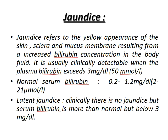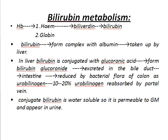What is Latent Jaundice? It is always asked in exams. Clinically, there is no jaundice, but serum bilirubin is more than normal but below 3 mg per deciliter. Clinically it is not apparent, but in calculation it is more than normal. When bilirubin is more than normal but clinically not apparent, then it is called Latent Jaundice.